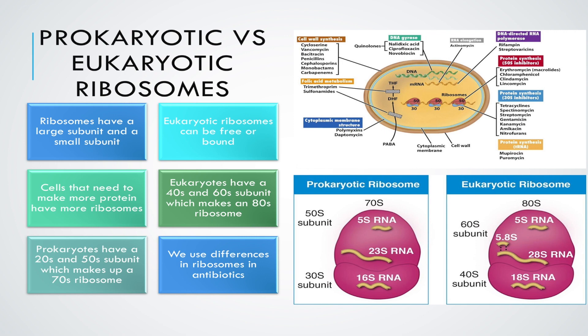Other antibiotics work on the 30s subunit. Those antibiotics include neomycin, gentamicin, doxycycline, tetracycline, and tobramycin, to name a few.